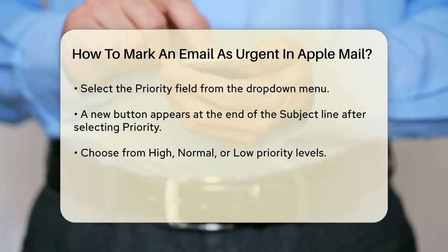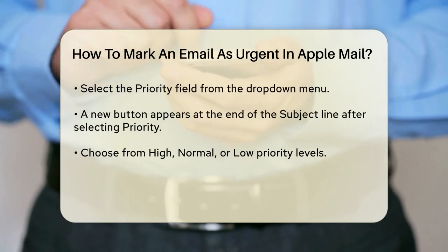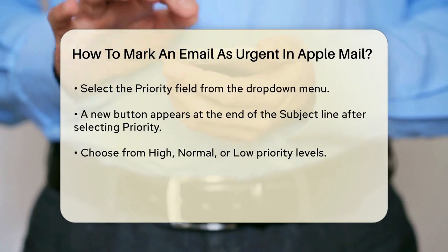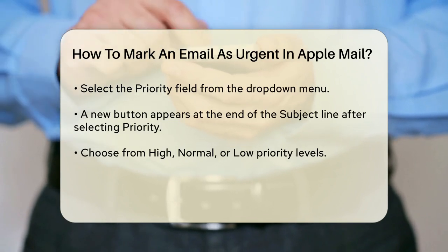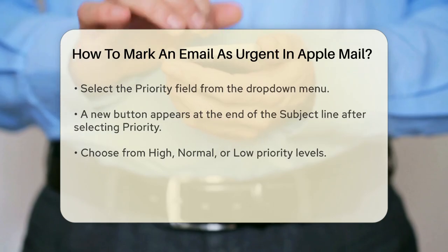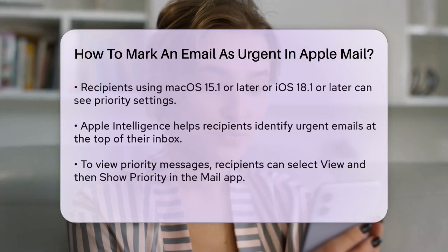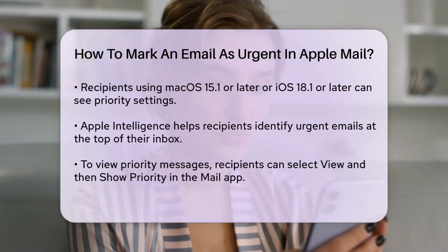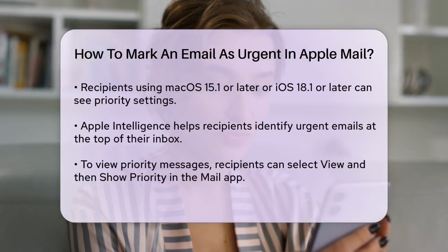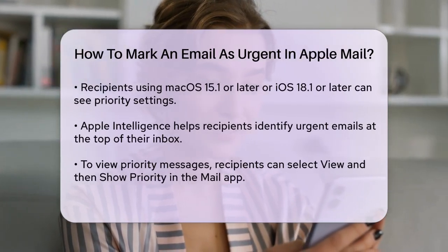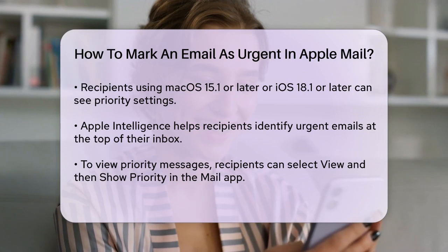You can choose from different priority levels, such as High, Normal, or Low. For recipients using Apple Mail, especially on macOS 15.1 or later, or iOS 18.1 or later, these priority settings can help them quickly identify urgent emails.